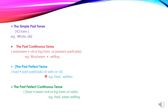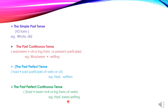Fourth, the past perfect continuous tense. The general form is had plus been plus V4, or the ING form of the verb, or present participle. Example: had been writing. In past perfect continuous tense we have three words: had been, then the ING form of the verb. For example: he had been writing his notes; they had been writing their notes.